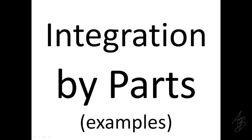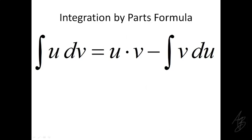In another video we took a look at the product rule for derivatives and how we can change that into a formula for integration. It's called the integration by parts formula. When we want to take the integral of something in this form, we can rewrite it as our function u times v minus the integral of v times du.